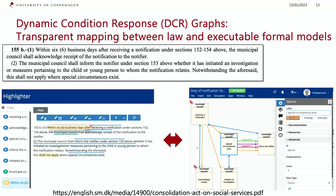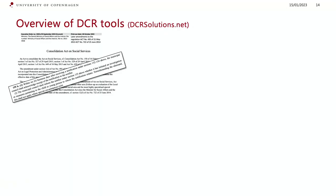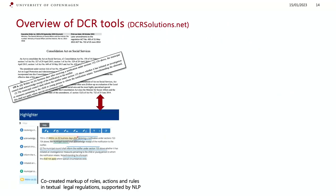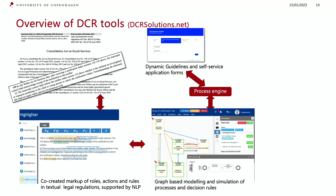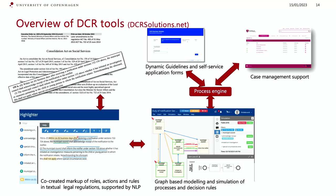What did we do? We developed a system jointly with lawyers, municipalities, computer scientists, and critical computer scientists, allowing people to take the text from the law, highlight what is a role, what is an activity, what is a rule. You get dual views of the same model — a graphical graph of the rules. You can put this into the tool, get the models, and use a process engine to simulate them. You can expose them as dynamic guidelines, embed them in a case management system with checklists and deadlines, and do process mining on what people actually do.